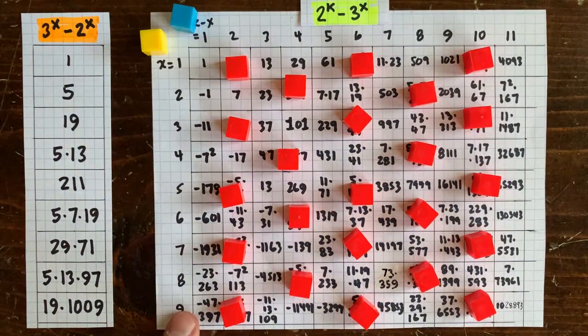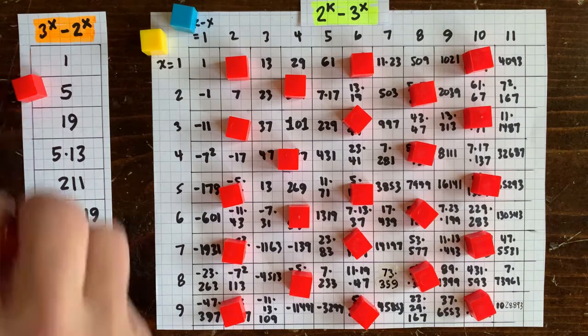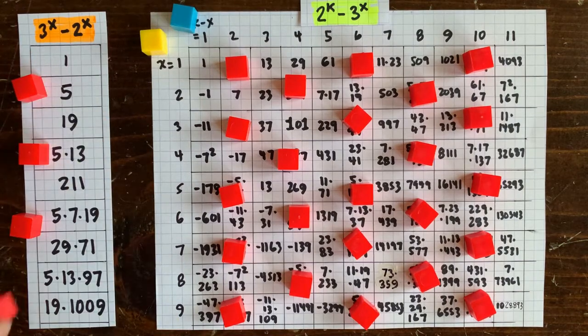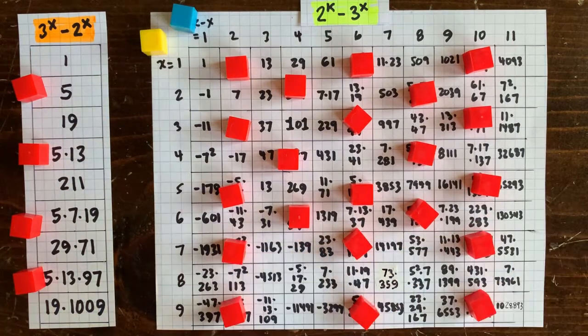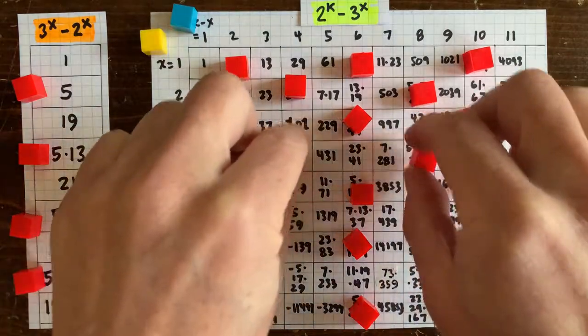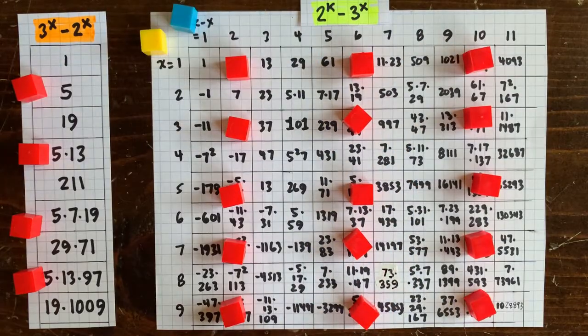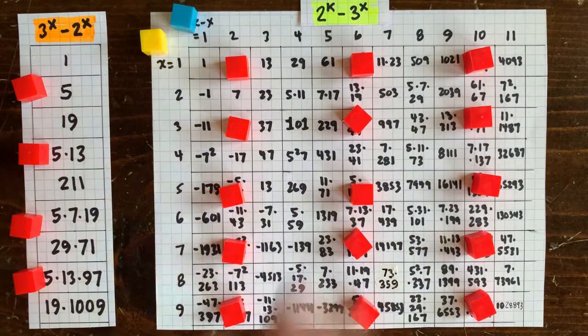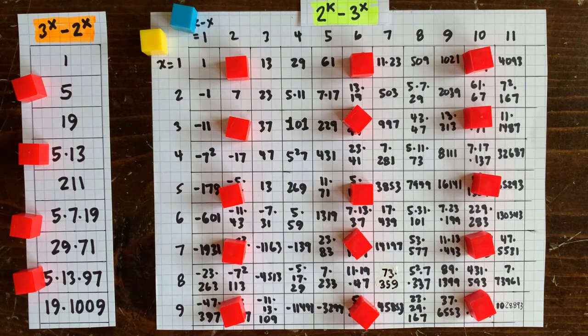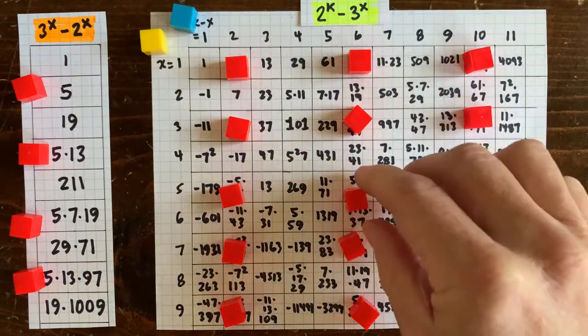No, we can only rule out the ones where 5 is a spoiler for 3 to the x minus 2 to the x. So, let's remove these rows. Now there can't be any circuit shaped like any of these combinations of x and k minus x.